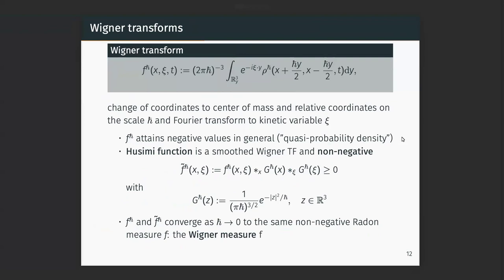The Wigner transform: you take your density matrix, change variables to center-of-mass and relative coordinates (Bohr variables), and take the Fourier transform in the relative coordinate ξ — which becomes the kinetic variable in the Vlasov equation. This gives you a function called the Wigner transform.